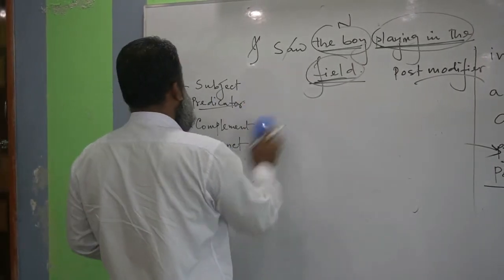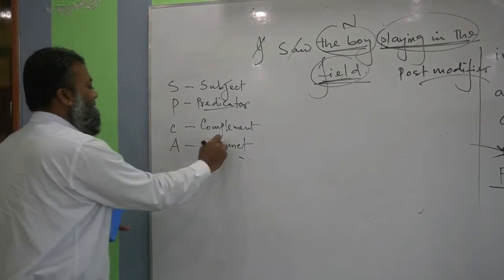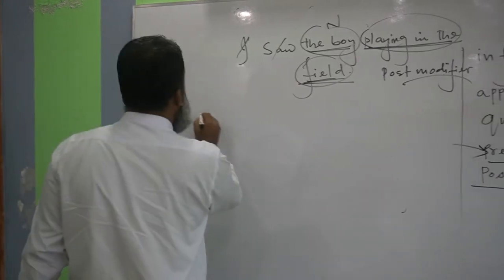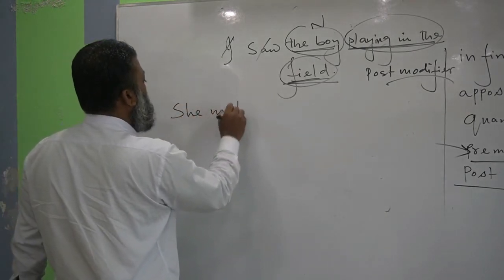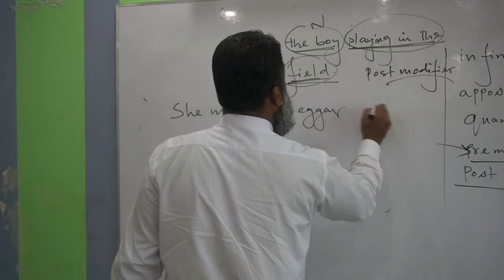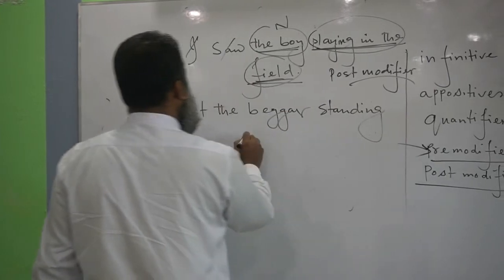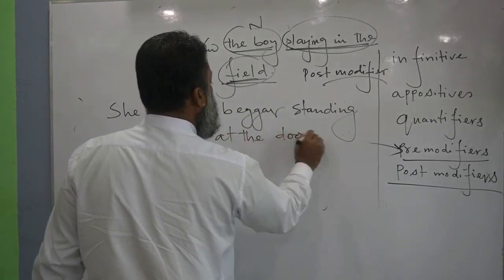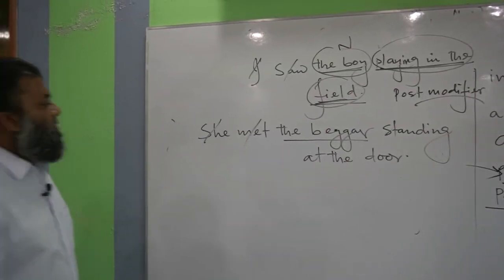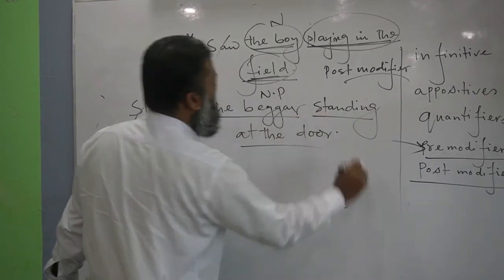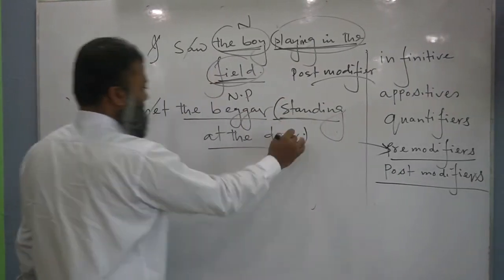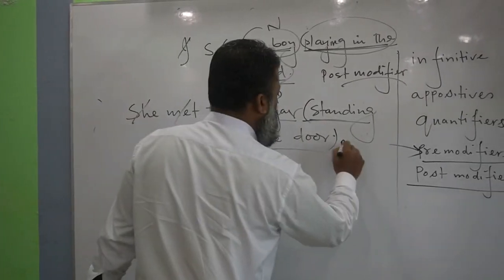Follow another sentence: 'She met the beggar standing at the door.' She is the subject, the finite verb is 'met', and 'the beggar' is the object — the noun phrase. It is followed by 'standing at the door.' Who is the beggar? The one who is standing at the door. So 'standing at the door' is the group of words called the post-modifier, since it takes its position just after the head word.